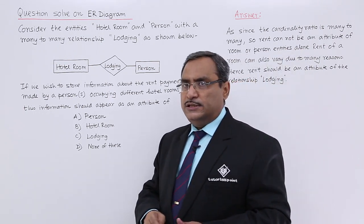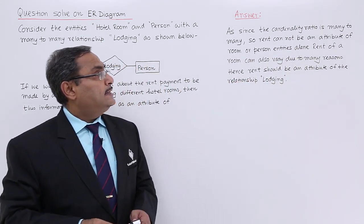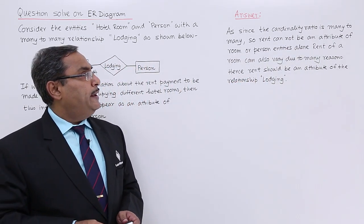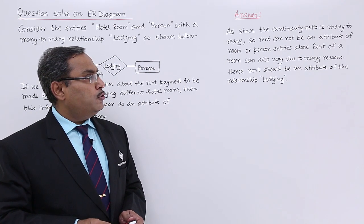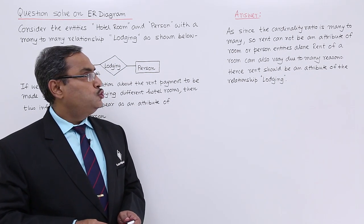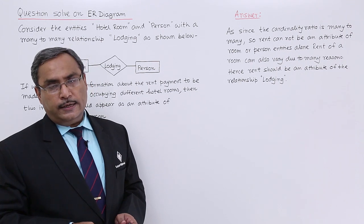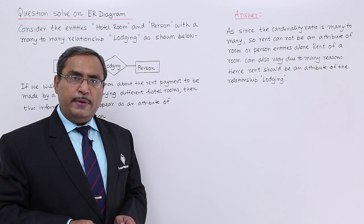For this we have the answer: since the cardinality ratio is many to many, rent cannot be an attribute of room or person entities because in that case it is remaining.